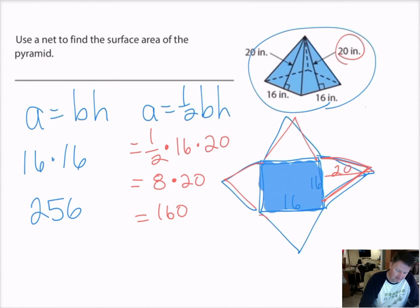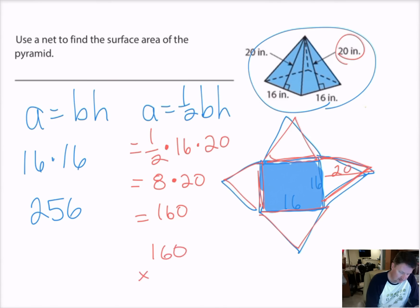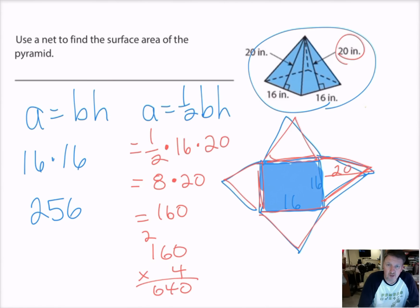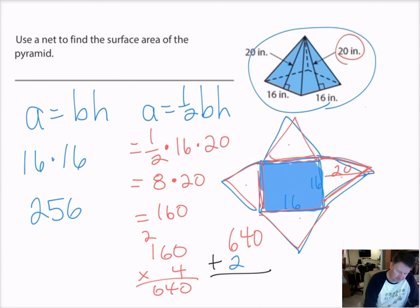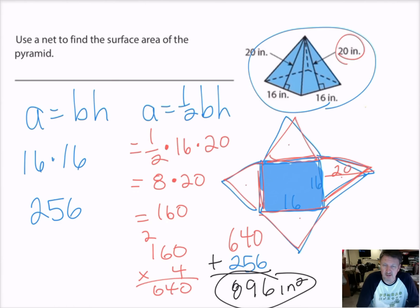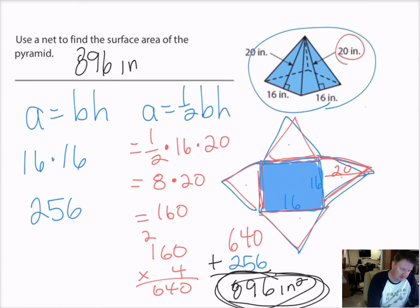But I need to find the area of all four triangles. They're all the same, so I multiply 160 times 4: 4 times 0 is 0, 4 times 6 is 24 (carry the 2), 4 times 1 is 4 plus 2 is 6. So the total area for all four triangles is 640 square inches. I add that to the area of the square, which was 256, and I get 896. So the total surface area of that rectangular pyramid is 896 inches squared.